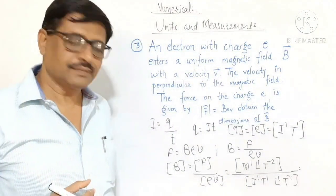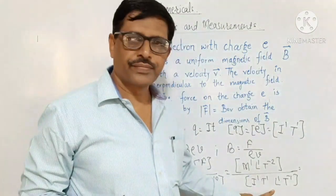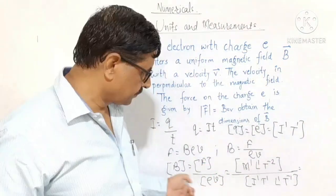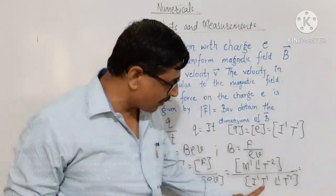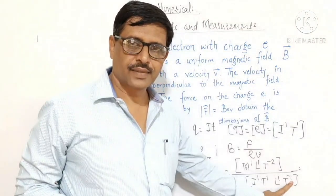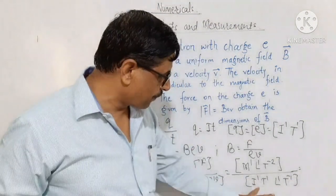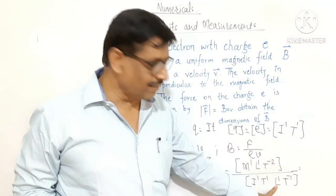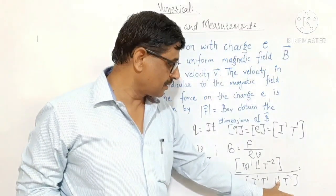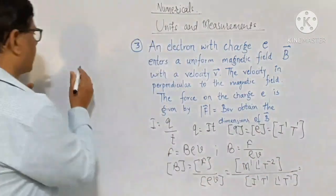In the denominator, T to the power 1 and T to the power minus 1 are present. In a product, we sum the powers, so plus 1 and minus 1 gives T to the power 0. There is L1 in the denominator from velocity and L1 in the numerator from force. In division, there is subtraction of powers, so L1 minus 1 plus 1 gives L0. What remains at the end are the dimensions of B.